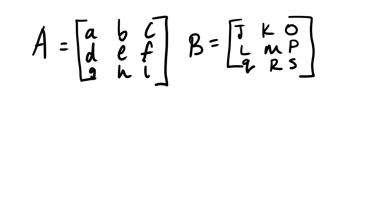Suppose we have these two matrices: matrix A whose elements are A, B, C, D, E, F, G, H, I, and then matrix B whose elements are J, K, O, L, M, P, Q, R, S. We are looking for the product of these two matrices.